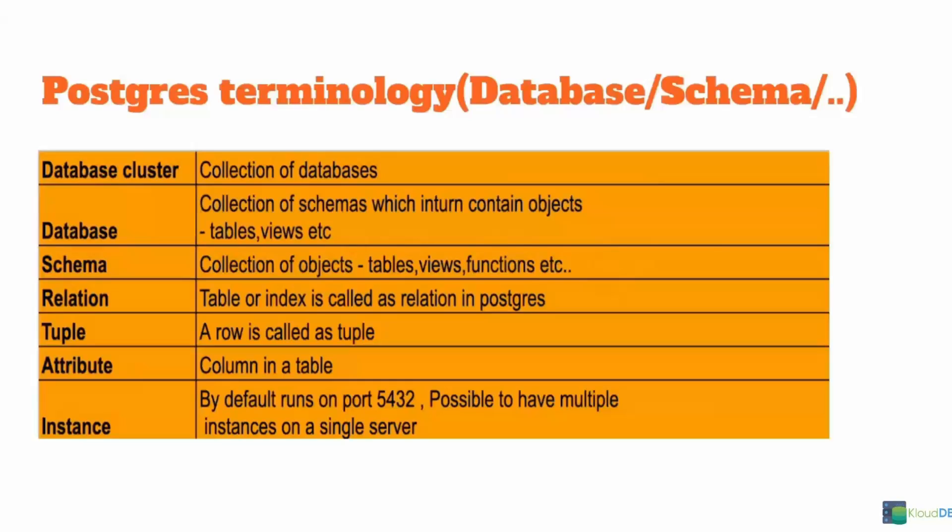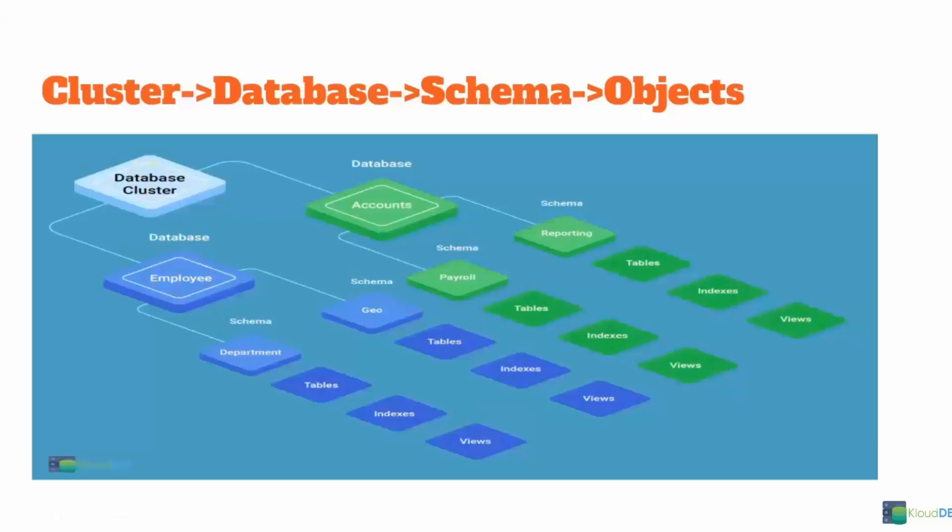These are some of the common terms you see in Postgres when you work with databases. Here's a diagram that explains the concepts discussed so far. In this diagram, we have a database cluster with two databases: employee and accounts. Underneath the employee database, we have two schemas — department and geo. Underneath the accounts database, the two schemas are payroll and reporting. Under each schema, we have objects like tables, indexes, and views. This is the object hierarchy in Postgres.